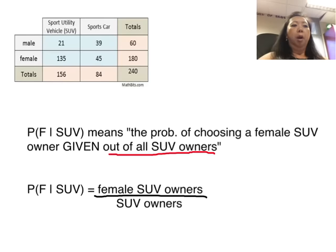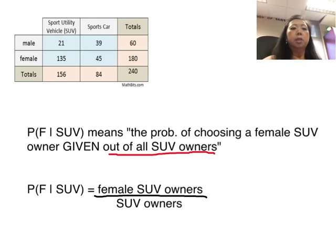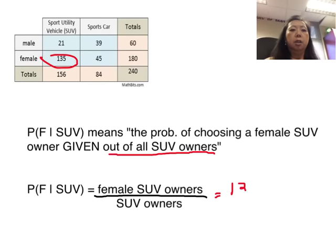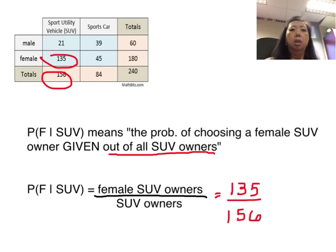Applying this to the car ownership situation: P of F bar SUV means the probability of choosing a female SUV owner. Notice it's both conditions — people who are female and own an SUV — given the total of all SUV owners. Not out of everyone, but out of SUV owners. So the fraction is 135 female SUV owners over 156 total SUV owners.